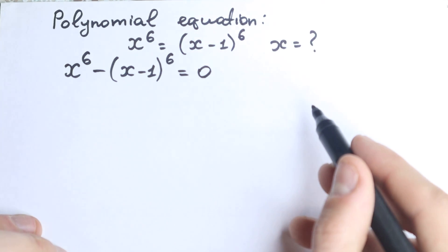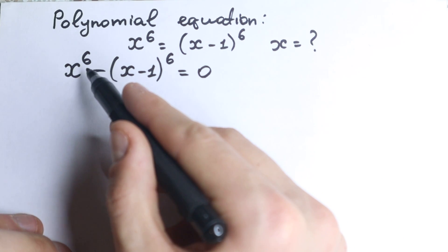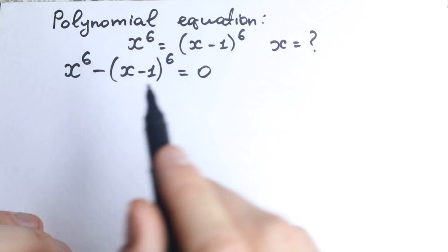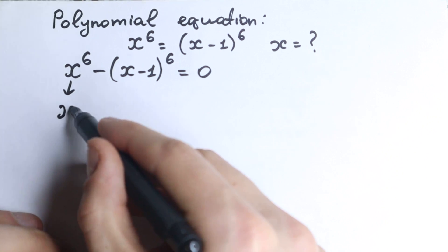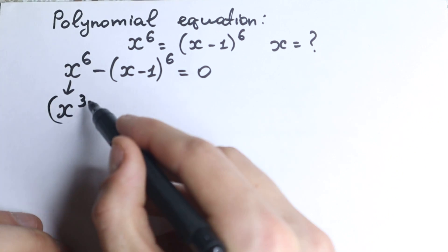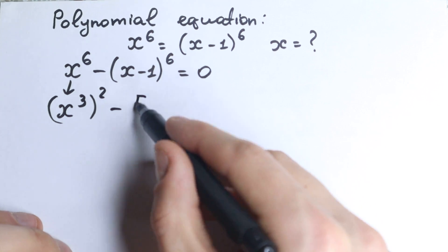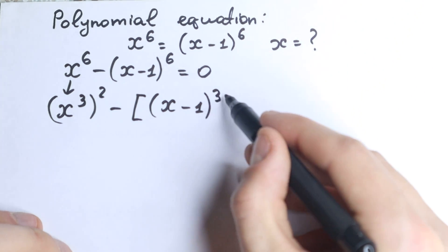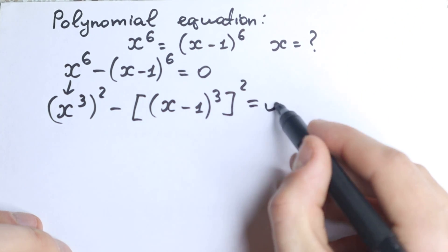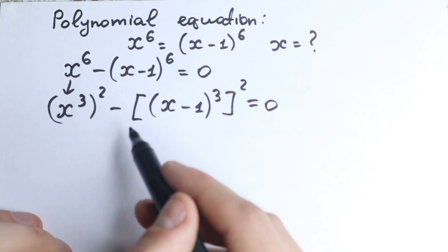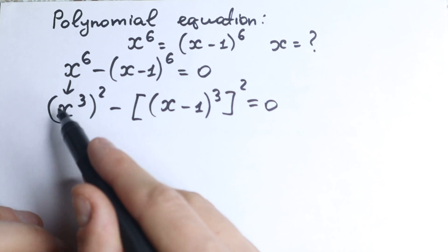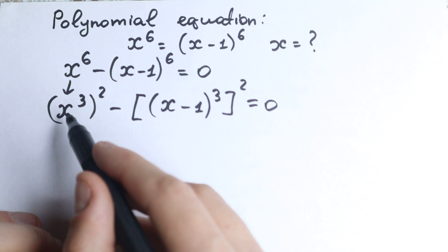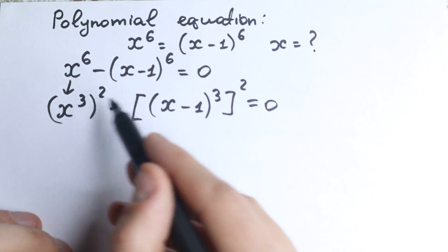We've just moved everything to the left hand side. Right now we have a huge sixth power. Let's try to express this as a cube power raised to the second power. We write x to the sixth power as (x cubed) squared, minus (x minus one cubed) squared, equal to zero. As you can see, we now have a difference of squares.